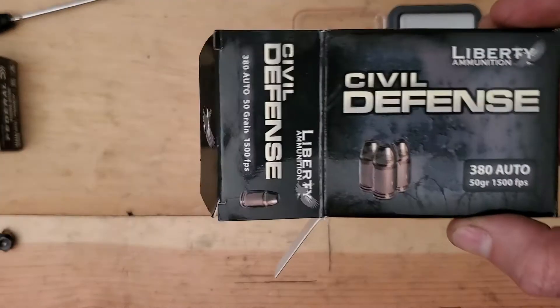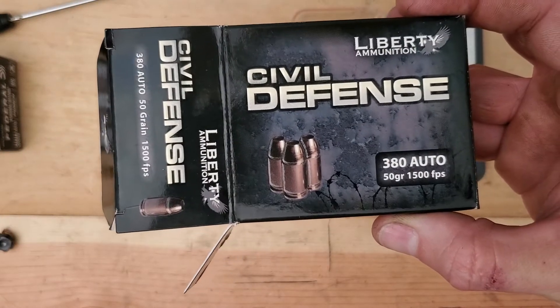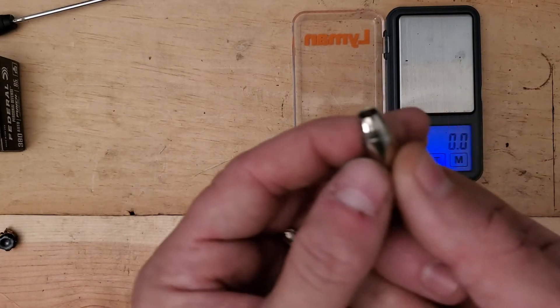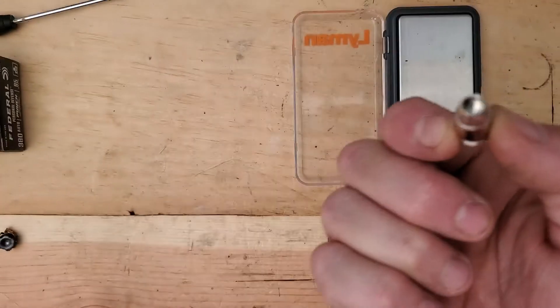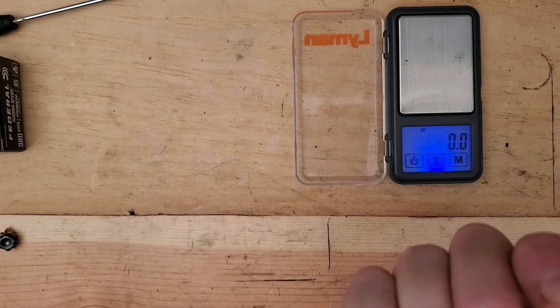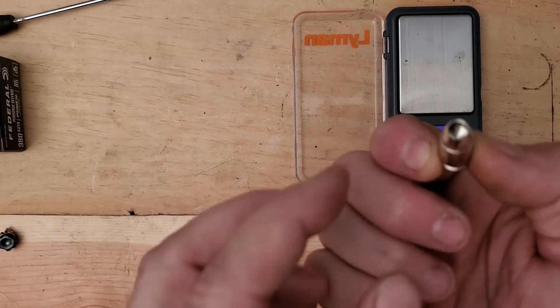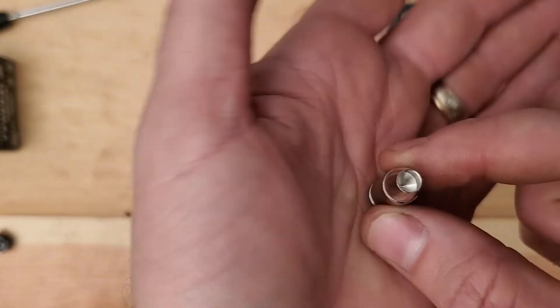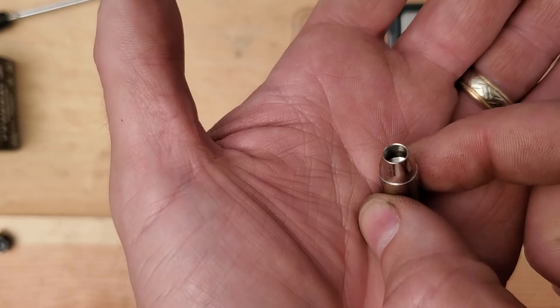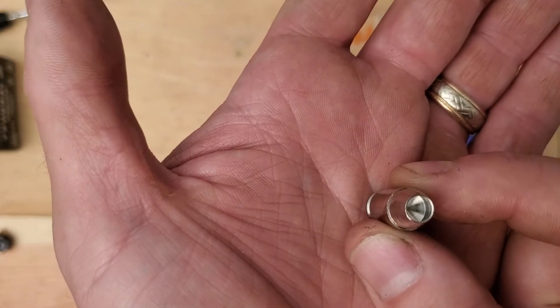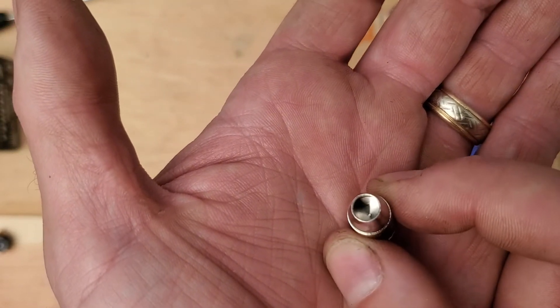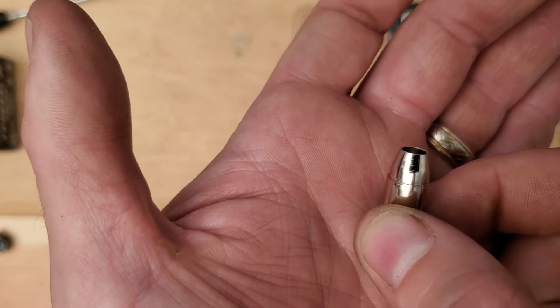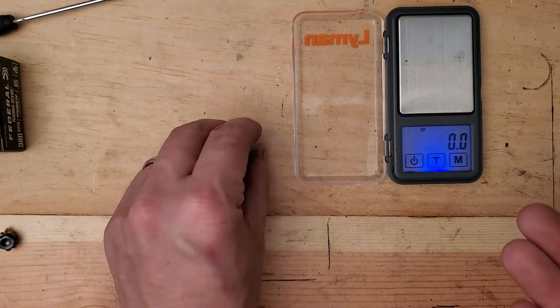Second up is the Liberty Civil Defense, 50 grain, 50 grain. This is the unfired projectile. I showed that on my video there. Let me see if I can get some more light out of my overhead light here. This is the unfired projectile here. And it's this huge, massive cavity with this very thin, thin, thin sidewall. It almost looks machined and not formed. It's a really neat looking projectile, 50 grain projectile.